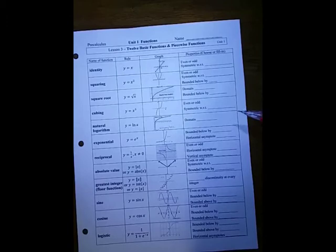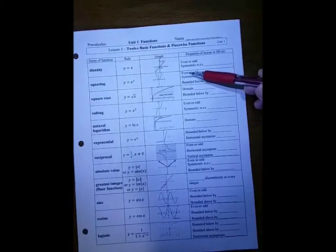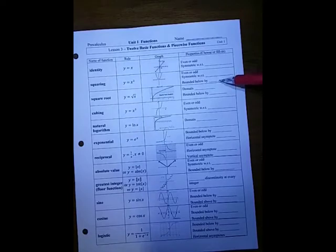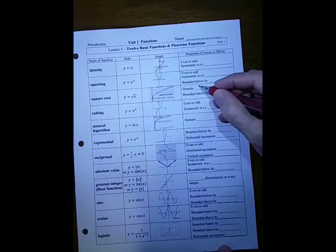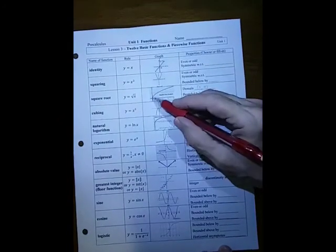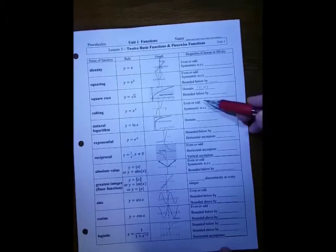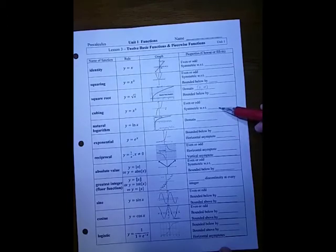Now I'm going to go through those with you to double check your work. The identity function is odd and symmetric with respect to the origin. The squaring function is even, symmetric with respect to the y-axis, and bounded below by 0. The cubing function is odd, so it's symmetric with respect to the origin.